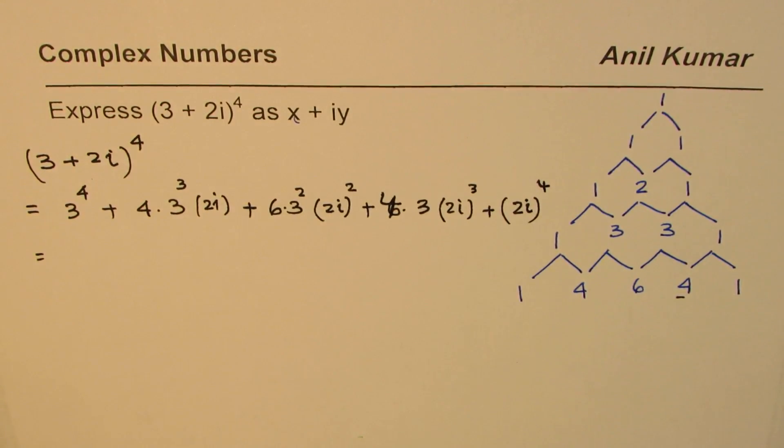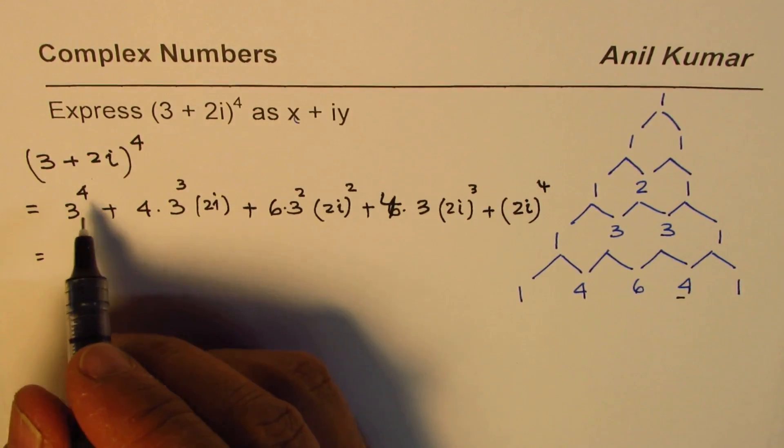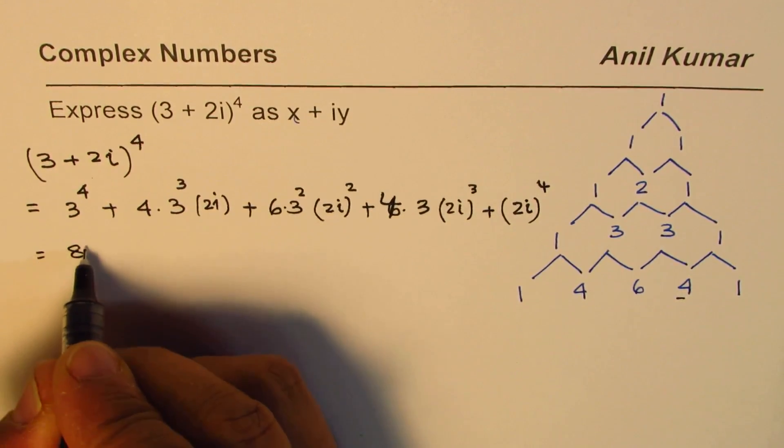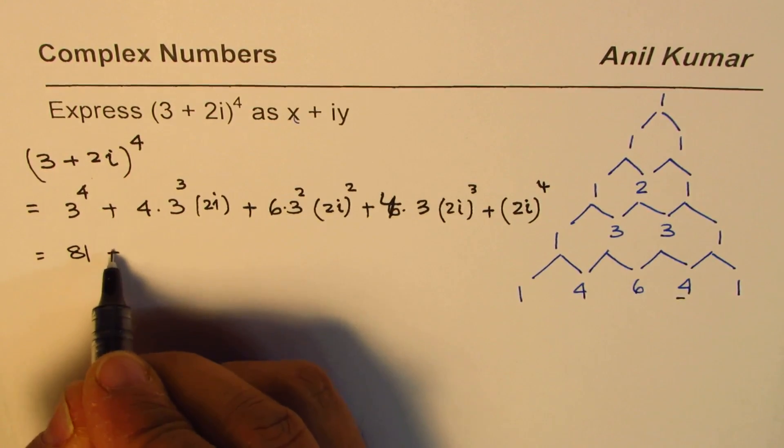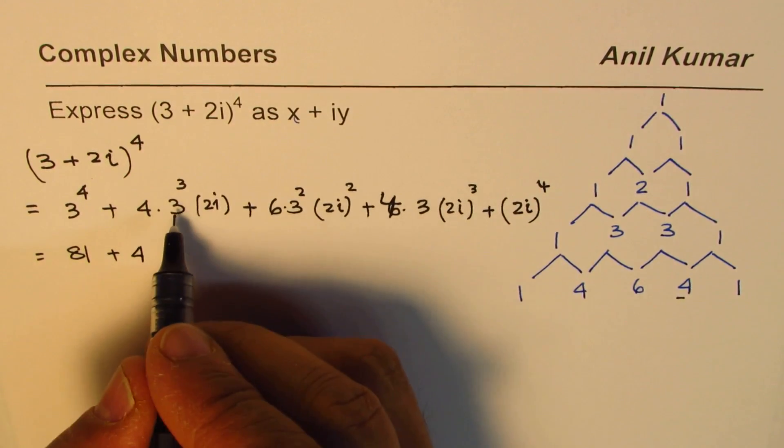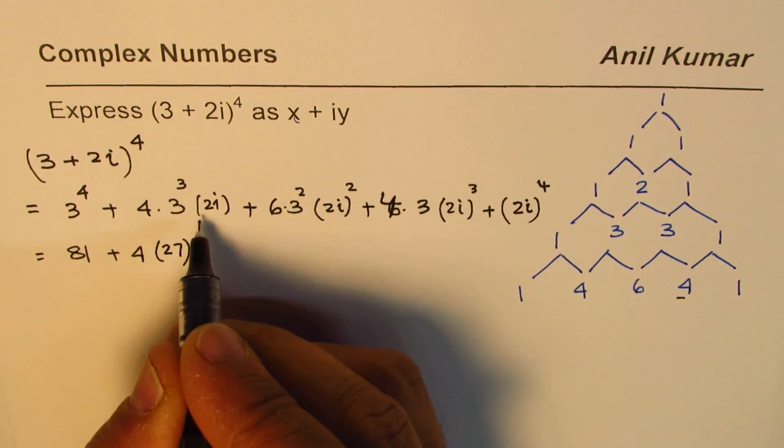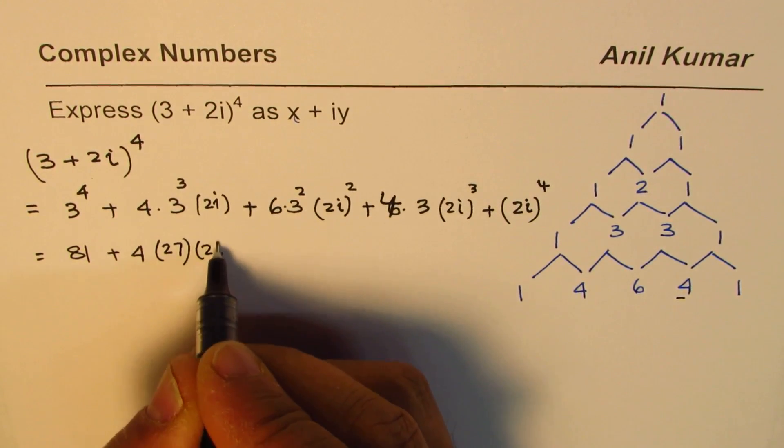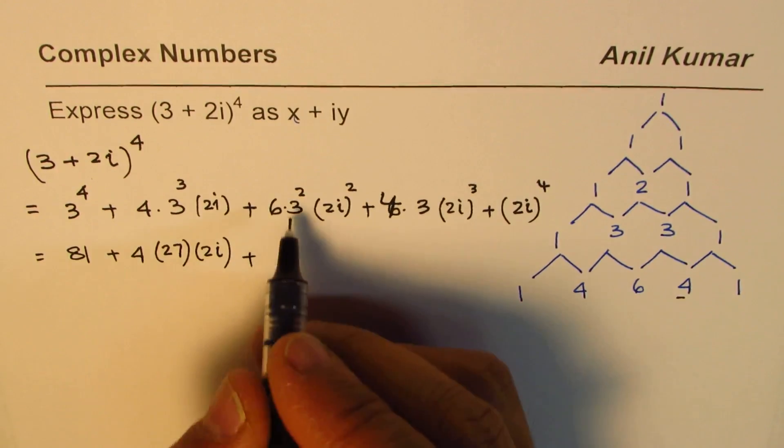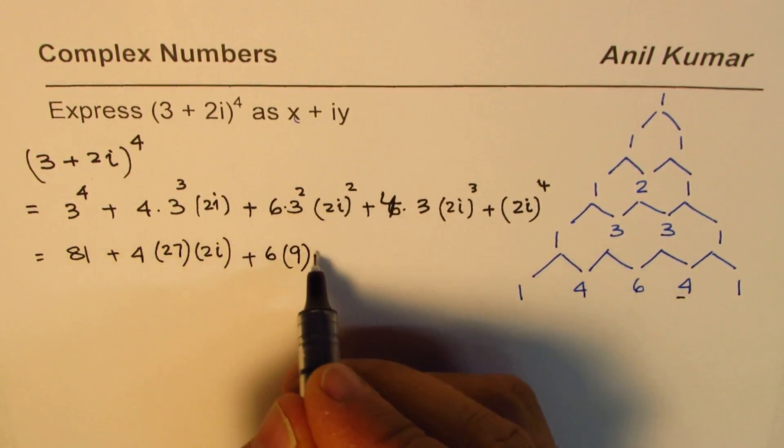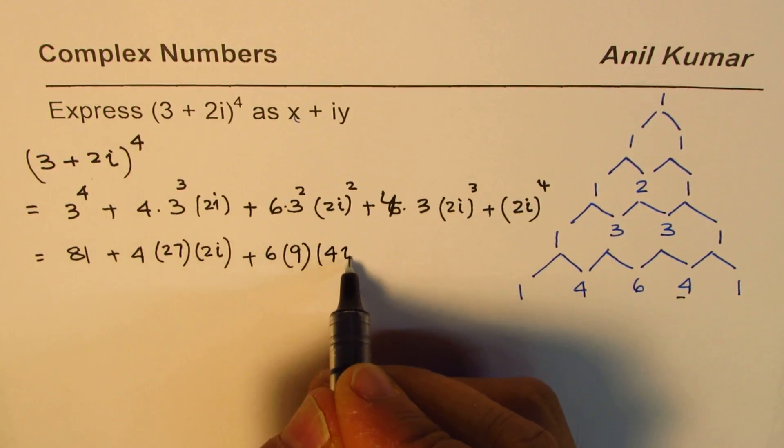So what we get here is 3 to the power of 4, you can use the calculator at this stage. 3 to the power of 4 is 9 times 9, which is 81. Let me write 81 here. Now here we get 4 times 3 cube, let us do it in two steps, which is 27 times 2i. Plus 6 times 3 square is 9, square of this is 4i square.